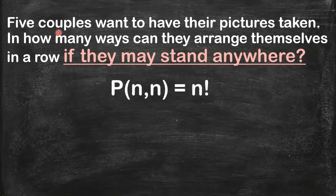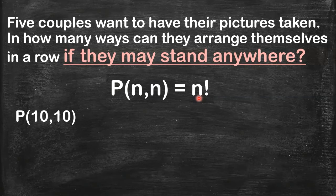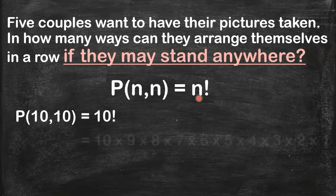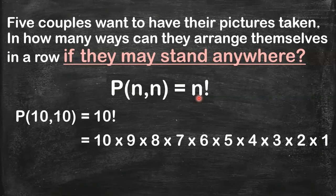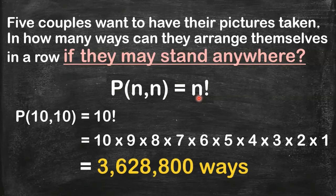So it's nice to recall this permutation formula. To get the number of possible arrangements, we evaluate ten factorial. So this one is equal to 10! And we can write ten factorial in its expanded form. You may want to get the numerical value, and that is equal to 3,628,800 ways to arrange the five couples in a row such that they may stand anywhere.